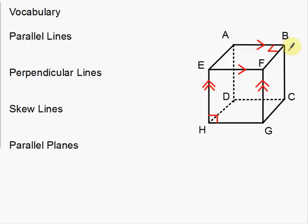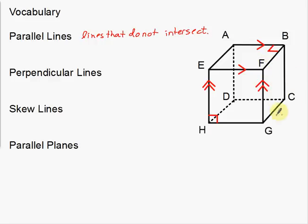We're going to use this cube to go over these vocabulary words. Parallel lines are lines that do not intersect — just like what you normally think. Now let's look at the notation. I'm going to choose two lines that are parallel: DH and CG. DH is parallel to CG. The parallel symbol is two vertical lines — that's our shorthand for parallel.